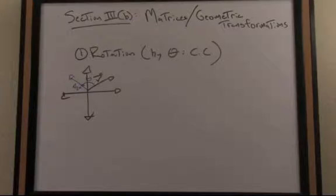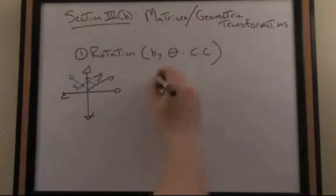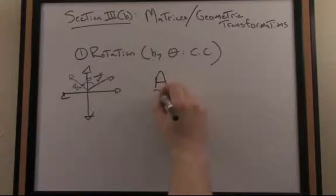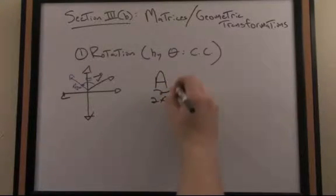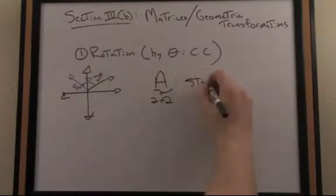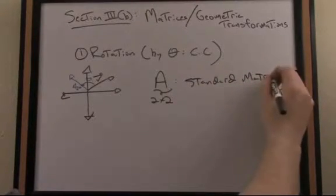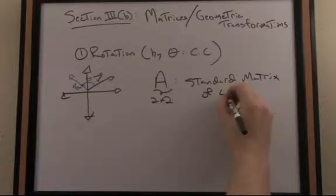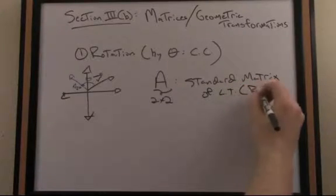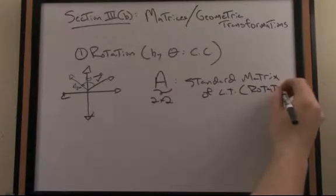By the way, that matrix A is called the standard matrix of the linear transformation. So in other words, again, our task here is to find the matrix A, by the way, it'll be a two-by-two matrix called the standard matrix of the linear transformation, specifically here our transformation is this geometric rotation.